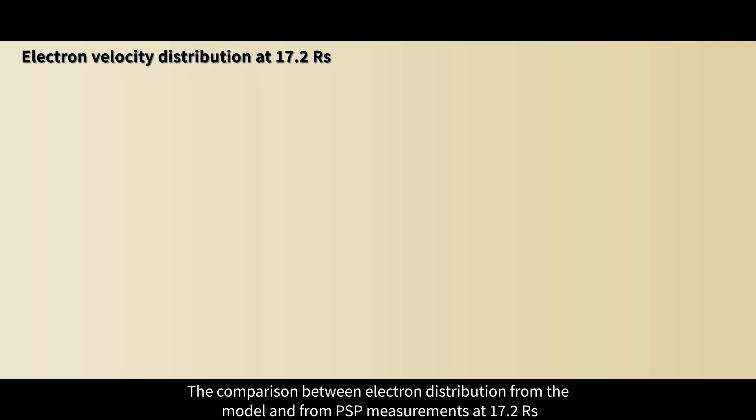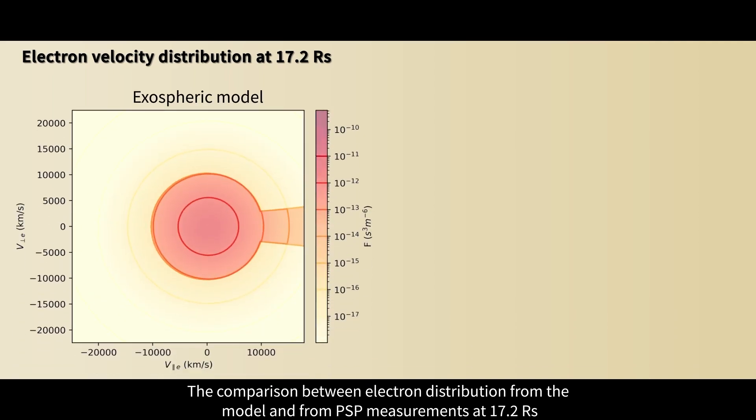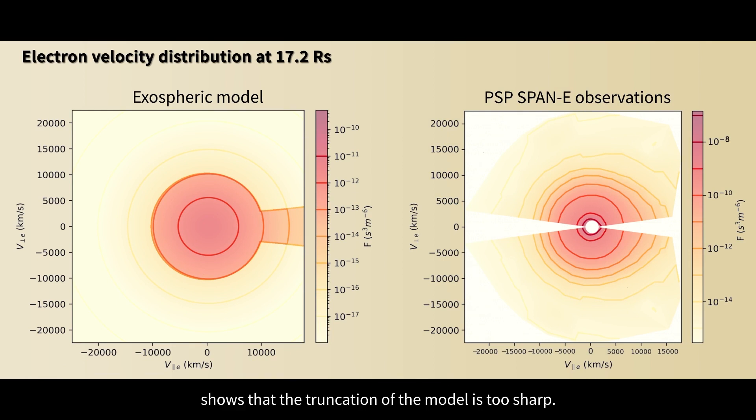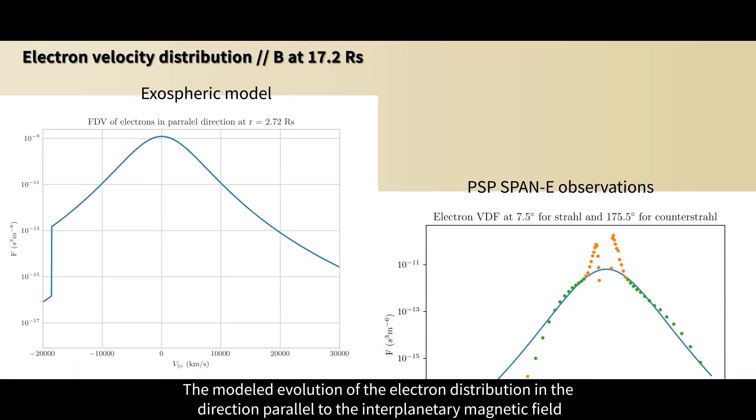The comparison between electron distribution from the model and from PSP measurements at 17.2 Rs shows that the truncation of the model is too sharp. Nevertheless, the observations show indeed an anisotropic distribution.